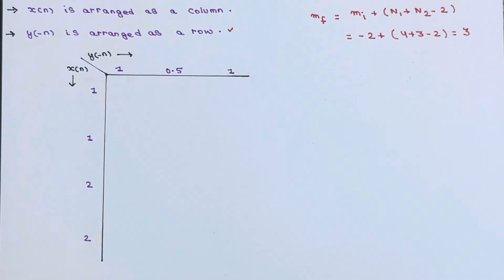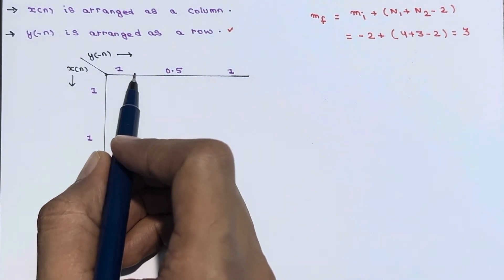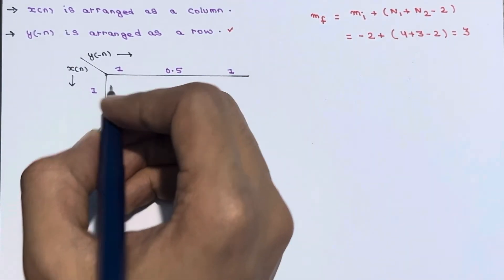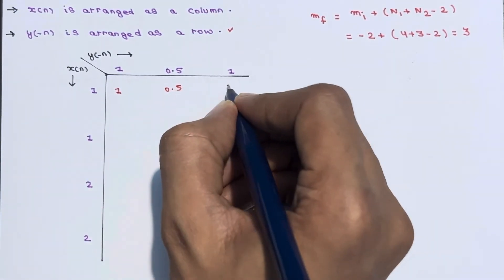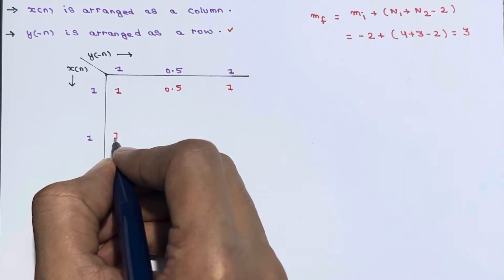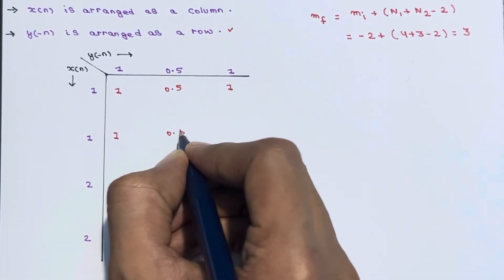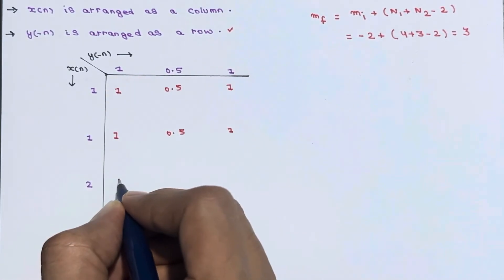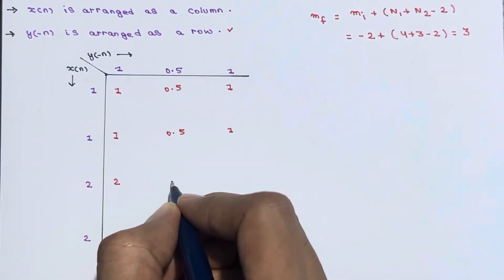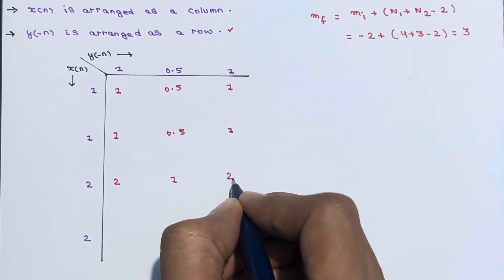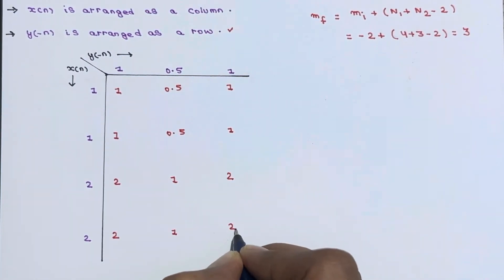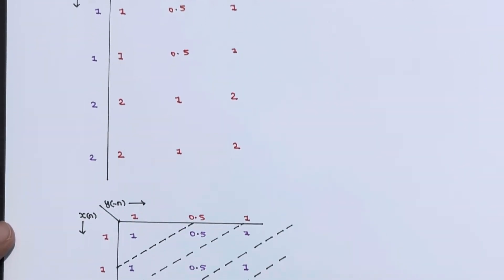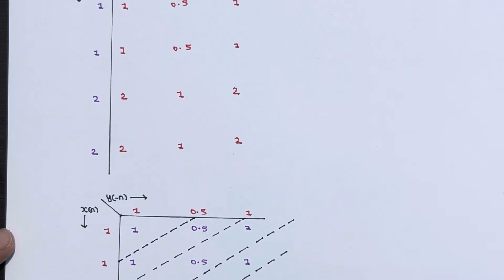To fill up the matrix array, multiply each element of the column with the corresponding element of the row. So 1×1=1, 1×0.5=0.5, 1×1=1; next row: 1×1=1, 1×0.5=0.5, 1×1=1; next row: 2×1=2, 2×0.5=1, 2×1=2; last row: 2×1=2, 2×0.5=1, 2×1=2.